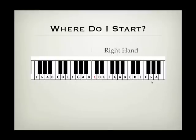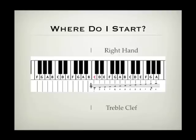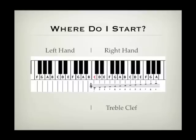Everything above middle C you're going to play with your right hand, and when it's written down in piano music it will be written on the treble clef. Here we've got a treble clef written at the beginning of the stave, and all the notes coming up from middle C correspond to different keys on the piano. So the first thing to work out when learning to read piano music is to read the treble clef — that's what you'll play with your right hand.